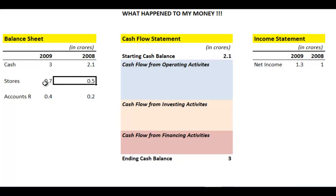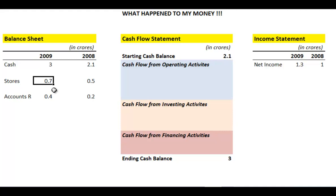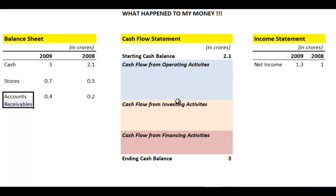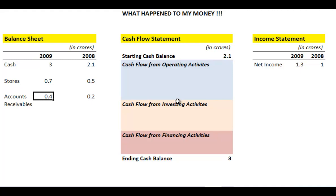Between 2008 and 2009 the company spent an extra 20 lakhs, investing that in hard assets — stores and all of that. Accounts receivable is essentially the amount of money others have to give the company: the company has sold the product but has not received cash for that revenue yet. Revenue has probably been recognized, but cash has not been obtained. In 2008, accounts receivable was 20 lakhs; in 2009 it went up by another 20 lakhs to become 40 lakhs.